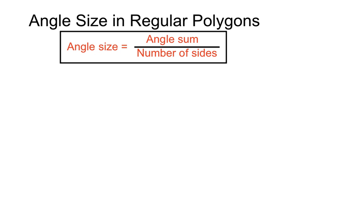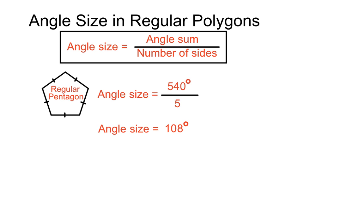Let's have a look at a couple of examples. A regular pentagon has an angle sum, which we found out from the previous video, 540 degrees. And we have five sides. So if we do 540 degrees divided by five, we'll find the size of each angle. And in this case, the angle size in a regular pentagon is 108 degrees.